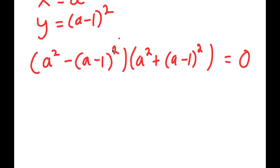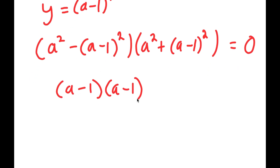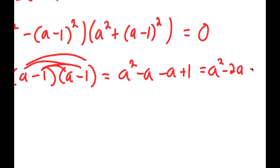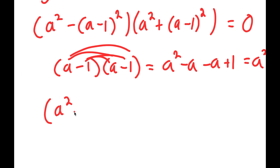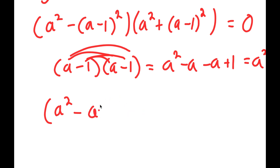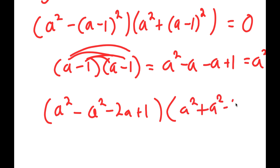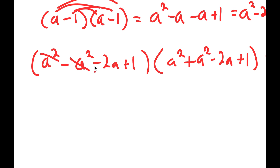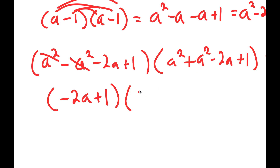Now I'm going to expand a minus 1 squared. So a minus 1 squared is the same thing as a minus 1 times a minus 1, which equals a squared minus a, and distributing the negative 1 gives minus a plus 1, which equals a squared minus 2a plus 1. So I get a squared minus a squared minus 2a plus 1, times a squared plus a squared minus 2a plus 1, equal to 0. On the left side, the a squared terms cancel, leaving negative 2a plus 1. On the right side, a squared plus a squared gives 2a squared, so I get 2a squared minus 2a plus 1. This equals 0.